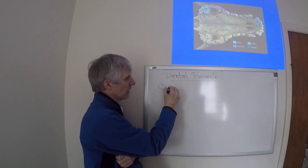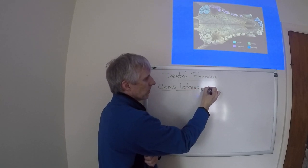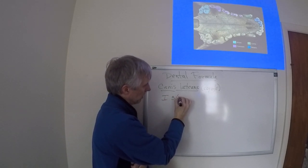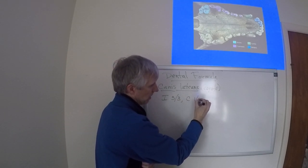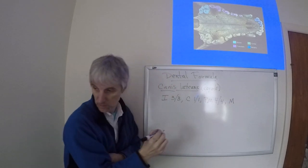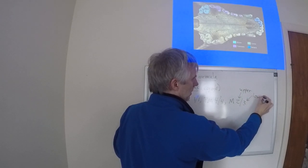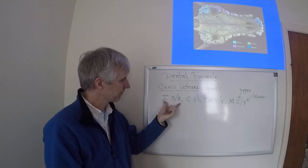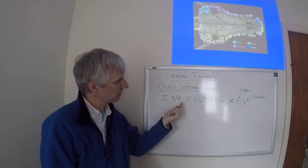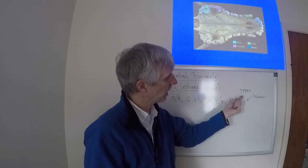This is Canis latrans, this is a coyote. We could describe its dental formula like this. I have the teeth shown here in the upper jaw: three incisors, lower jaw three incisors, canine upper one, lower one, four-four.